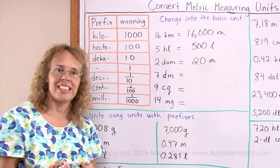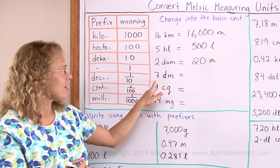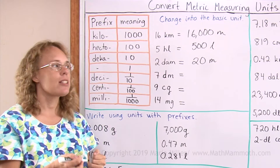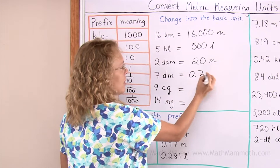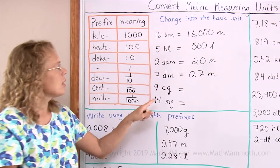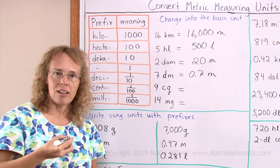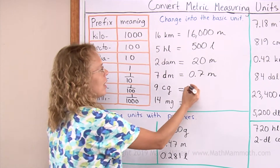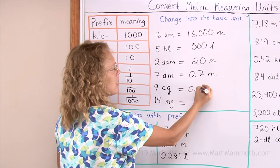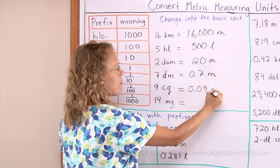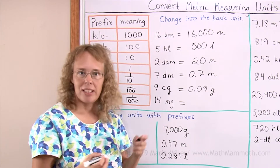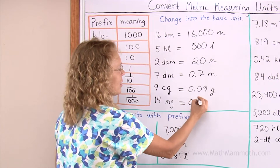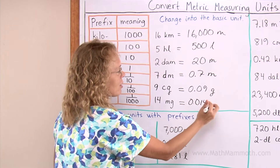Seven decimeters: deci means one-tenth, so seven-tenths of a metre — you could write it as a fraction or as a decimal, seven-tenths of a metre. Nine centigrams: centi means one-hundredth, so we have nine-hundredths of a gram — write it as a fraction or usually as a decimal. And fourteen milligrams: milli means one-thousandth, so fourteen-thousandths of a gram, which as a decimal has three decimal places.